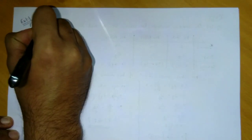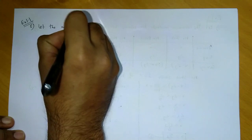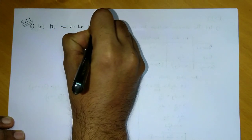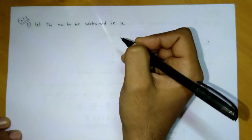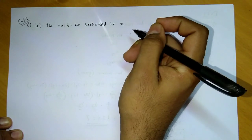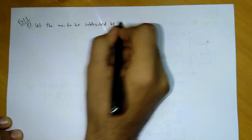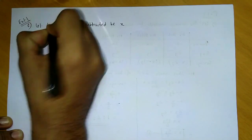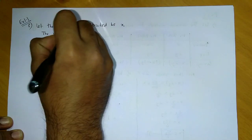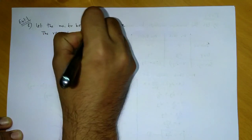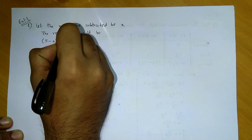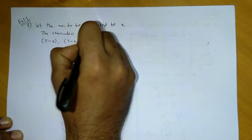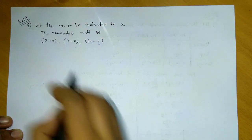We have to assume a variable. Let the number to be subtracted be x. If we subtract x from 5, 7, and 10, the remainders would be 5 minus x, 7 minus x, and 10 minus x. So these are the three remainders after subtracting x.